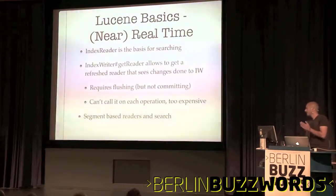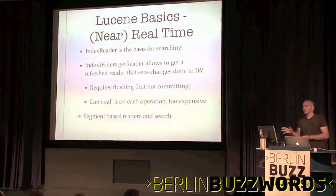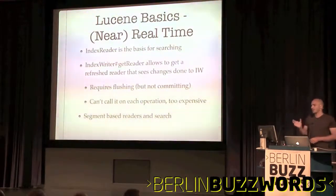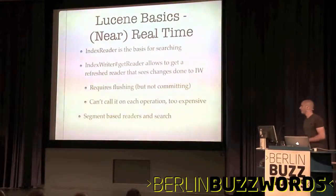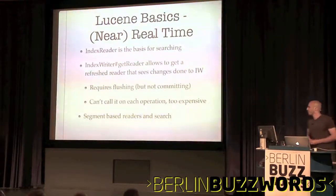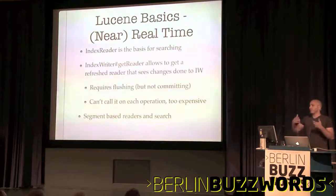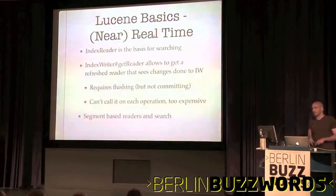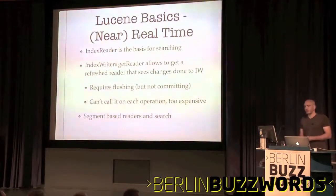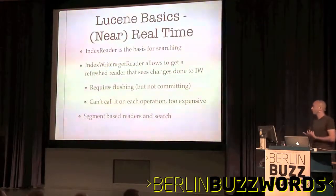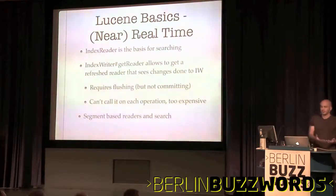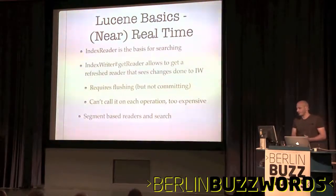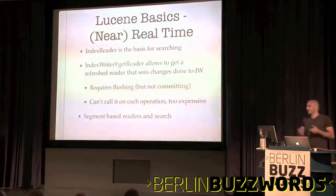The near real-time aspect of Lucene was added in Lucene 2.9. If you want to do search, you construct an index reader. You call index writer get reader and get a refreshed reader that sees all changes that happened up to that point. In the current Lucene version it does require flushing, which is why this operation is expensive — you can't really call it before each search. You would call it every second or so.